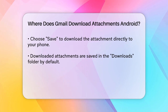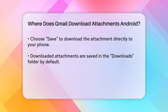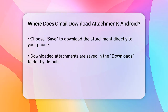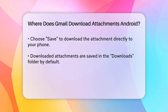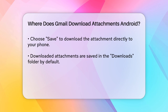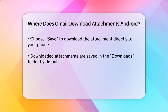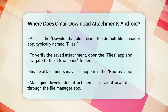After you've downloaded the attachment, it will be saved in your phone's default download folder. On most Android devices, this folder is called Downloads and can be accessed using the default File Manager app, often named Files. To verify that the attachment has been saved, open the Files app, navigate to the Downloads folder, and you should see your saved attachment there.